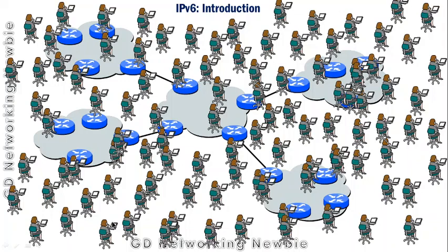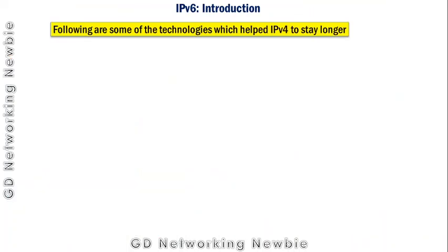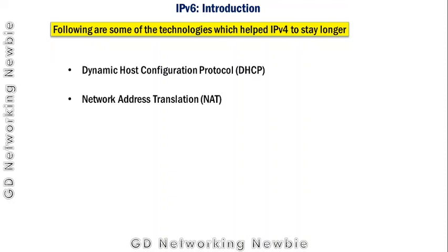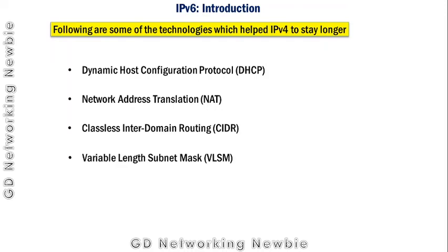As a temporary solution, some technologies were introduced and they are still in use, helping us live with the current number of IPv4 addresses. These technologies are DHCP, NAT (Network Address Translation), CIDR, and VLSM. For example, in DHCP, instead of assigning an IP address permanently to users, they are assigned dynamically, which helps conserve addresses.